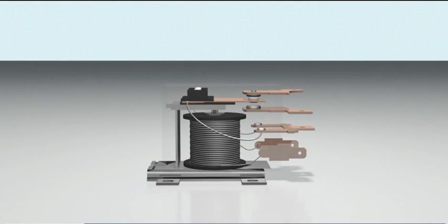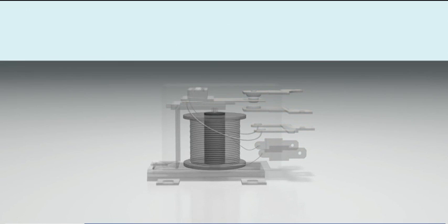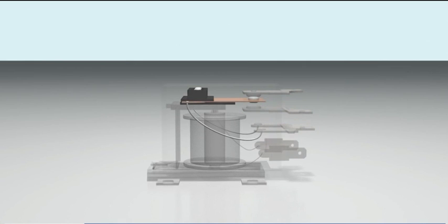A simple electromagnetic relay consists of a coil of wire wrapped around a soft iron core, a movable iron armature, and one or more sets of contacts.